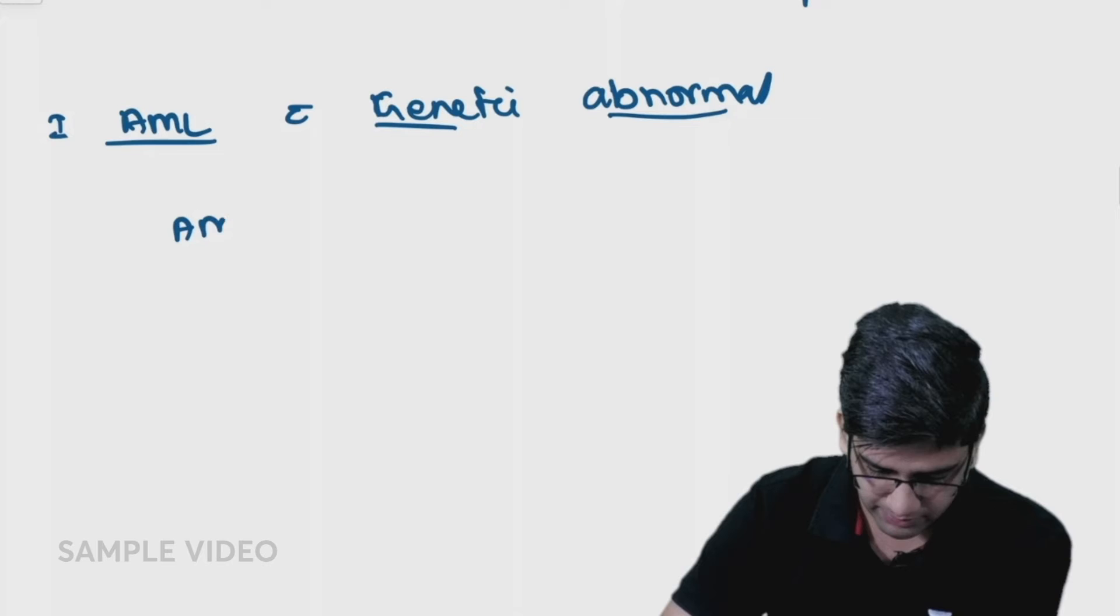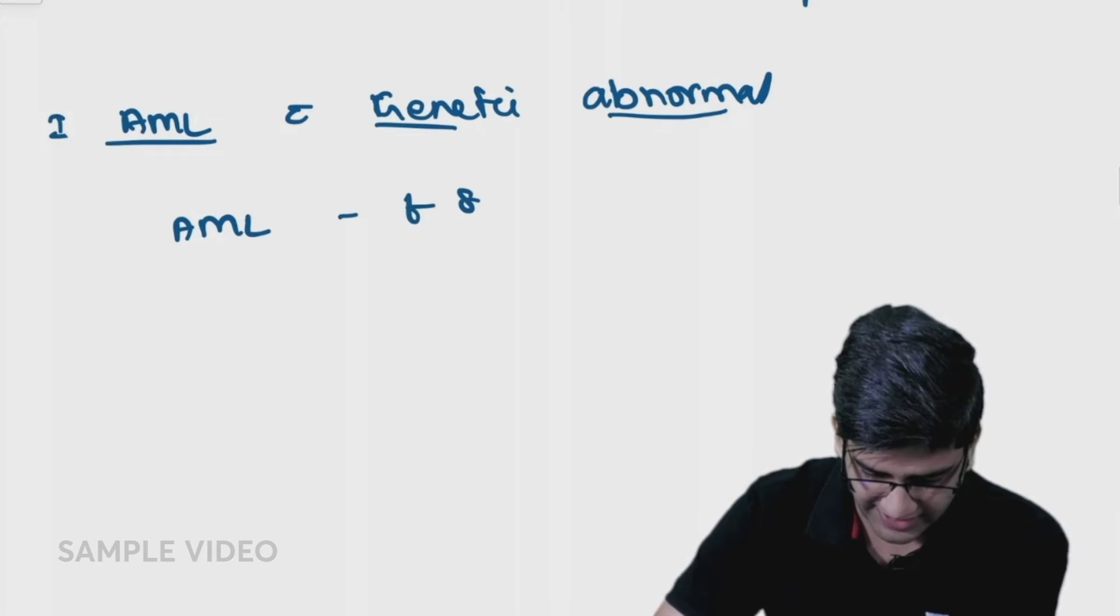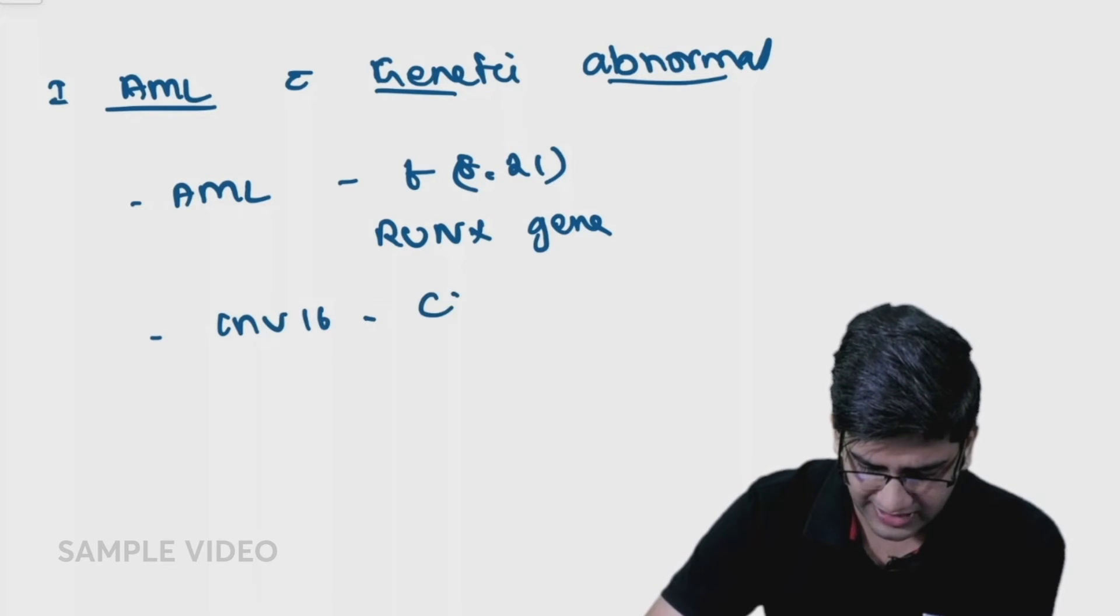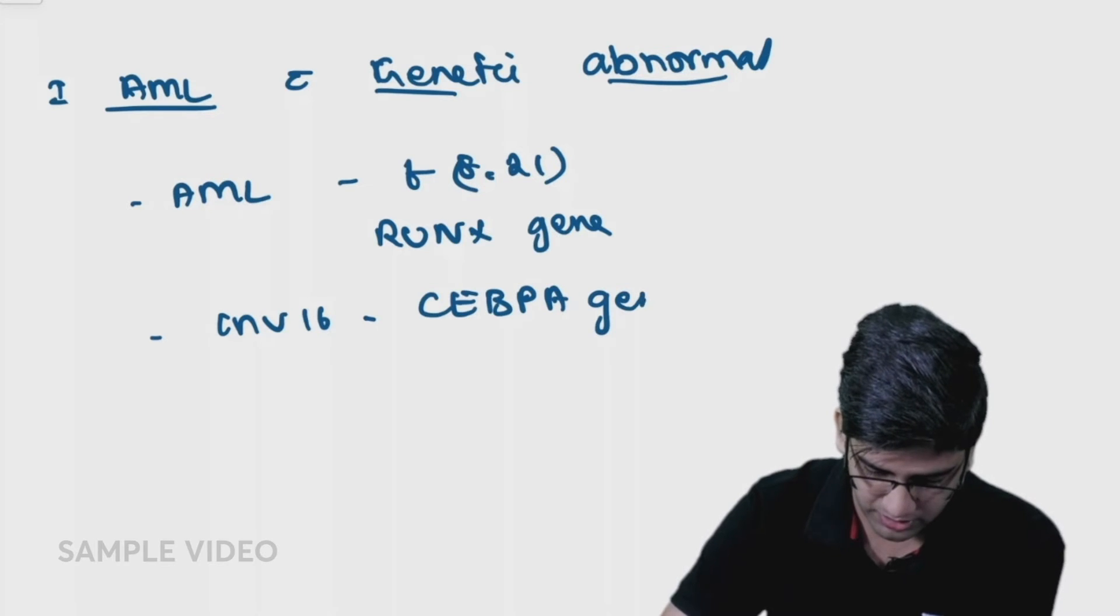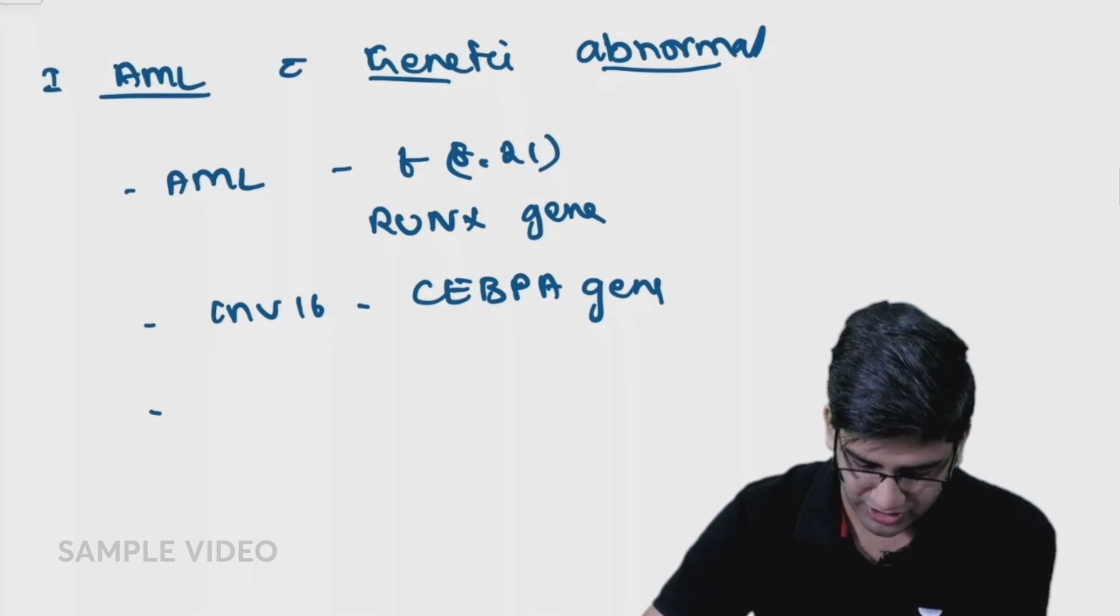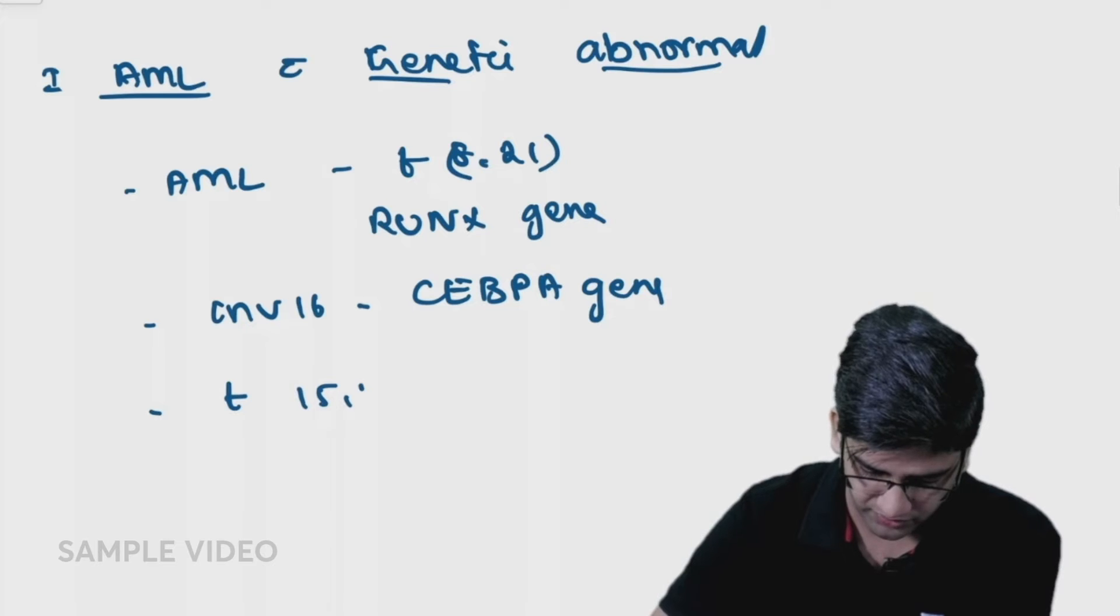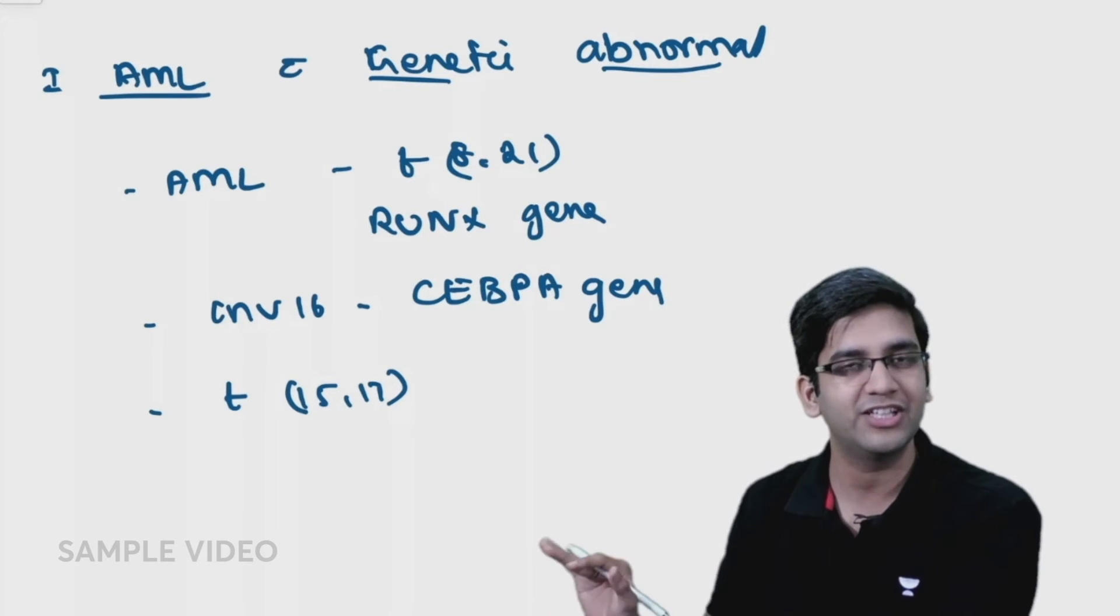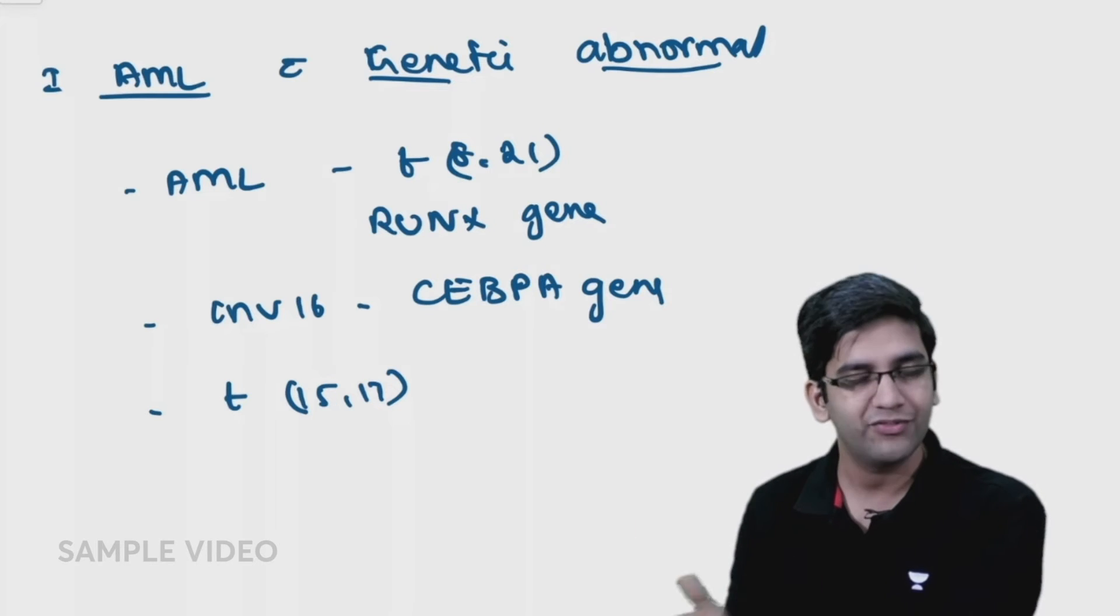Though it might look like an exhaustive classification, it's very simple to remember. The easiest way to remember is the exception to the blast criteria. AML with translocation (8;21) has one important gene called RUNX that's getting translocated. AML with inversion 16 has CEBPA gene. The third one is AML with translocation (15;17) - we'll talk about the gene later.